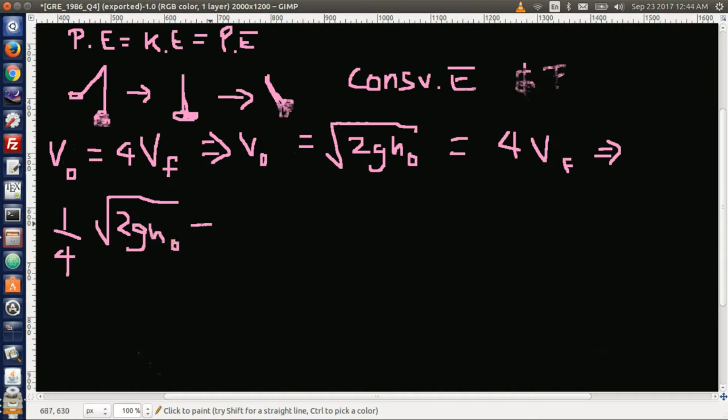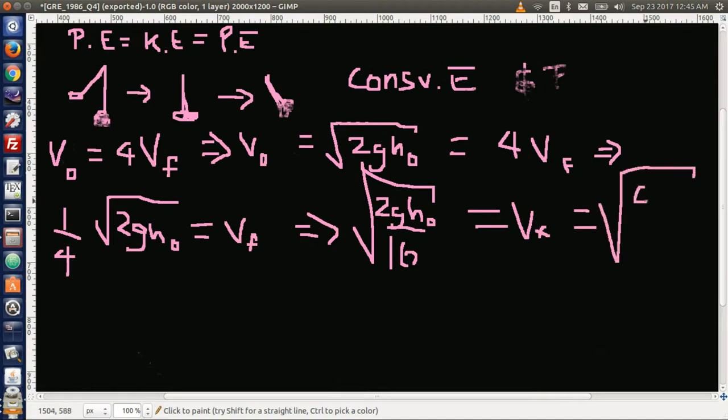Let's put the 4 inside the square root. So we have v final equals square root of 2gh₀ over 16. And 4 squared is 16, and the 2 and 16 simplify to 8. So we have v final equals square root of gh₀ over 8.